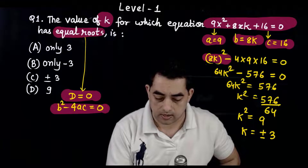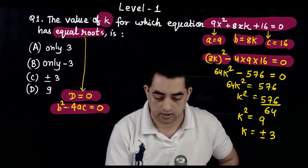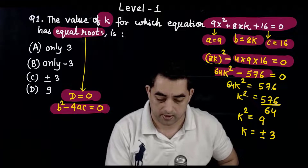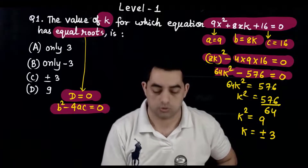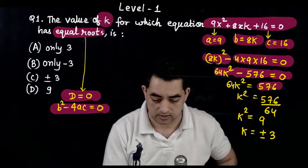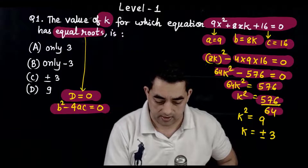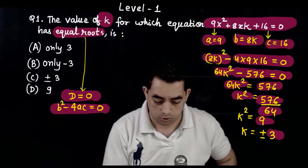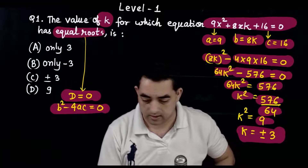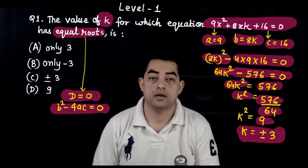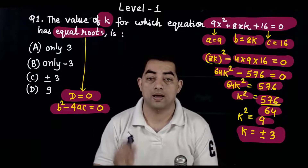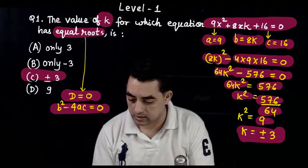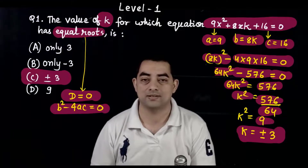Substituting: (8k)² - 4×9×16 = 0 → 64k² - 576 = 0. Taking 576 to the other side and dividing by 64, we get k² = 9. Taking the square root gives plus minus 3. So the correct answer is option C: plus minus 3.